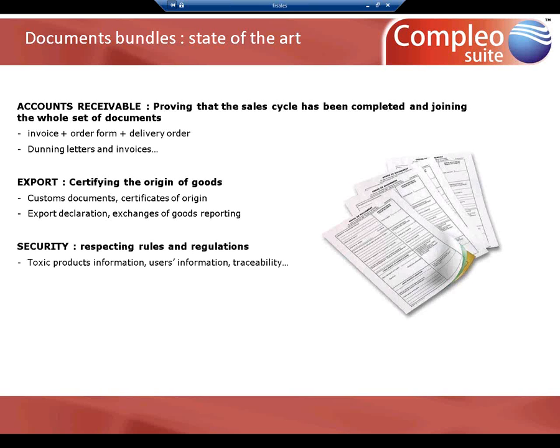In terms of security in the pharmaceutical industry, for example, or in the chemical industry, you need to respect rules, regulations, and quality norms. In that area, it's very important to link delivery orders with toxic products information, user information for the product, or traceability.